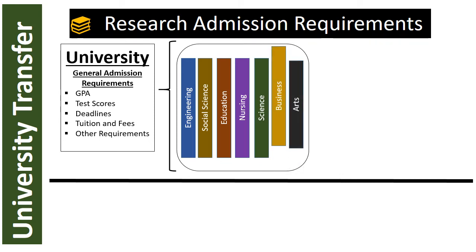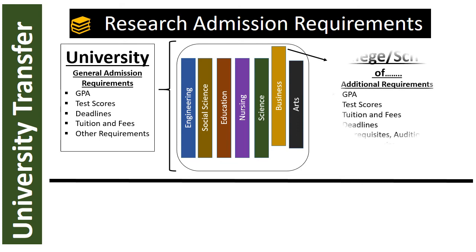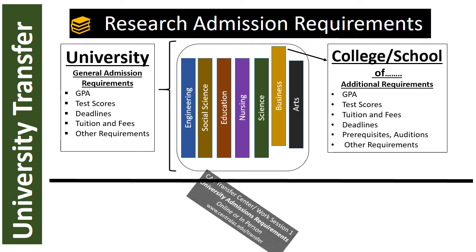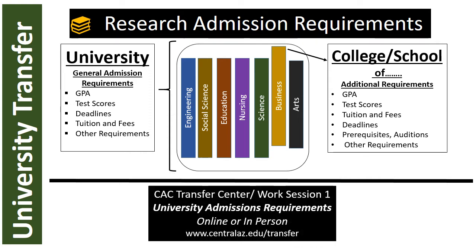Additional college or school requirements could include GPA, test scores, tuition, fees, deadlines, prerequisites, auditions, and more. You can be accepted into the university but not into a specific college or school within the university if you do not meet the additional requirements. To learn more about researching university requirements, it is highly recommended that you view online or attend in person the CAC Transfer Center Work Session 1: Researching University Requirements. Information is available at www.centralaz.edu/transfer.